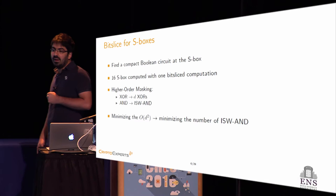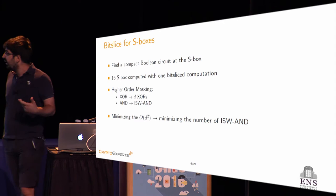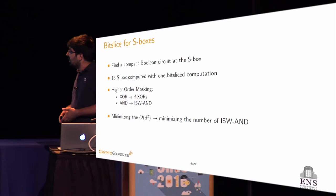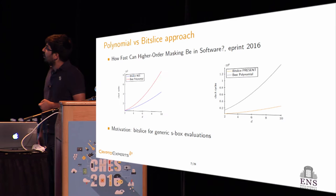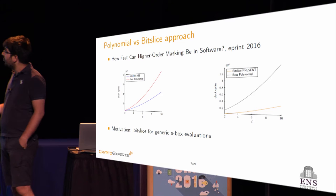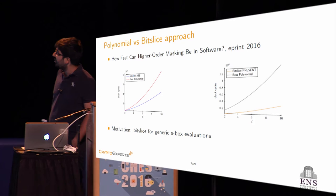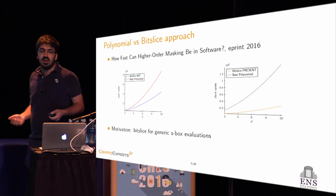How to apply higher order masking for the bit-slice approach? At the circuit level, you replace every XOR gate with the XOR CPU instruction and every AND gate with the ISW-AND scheme, which is just ISW multiplication on F2. The goal is to minimize the number of calls to ISW-AND. In a previous work on ePrint called 'How Fast Can Higher-Order Masking Be in Software,' we compared the polynomial and bit-slice approaches for AES and PRESENT, finding the bit-slice approach gives very good results for any order D. This motivated us to generalize the bit-slice approach for any kind of S-box.